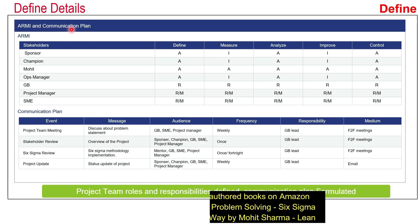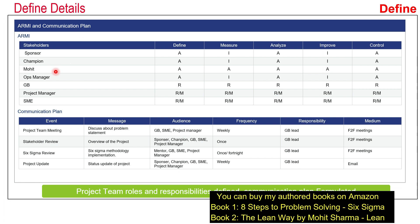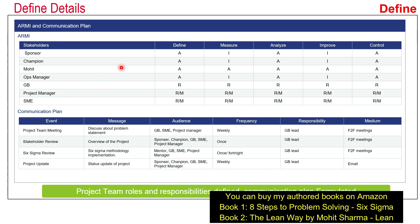The team also created an ARMY chart and communication plan to define the roles and responsibilities of all sponsors, champions, operations manager, project manager, and team members. In this chart, A stands for approver, R for resource, M for member, and I for informed — indicating in which phase each person approves, is informed, or contributes. Resources are those with technical knowledge, such as an IT person. Team members help the Black Belt with data collection, implementing solutions, and brainstorming. They also created a communication plan and followed it to ensure the project was completed on time.